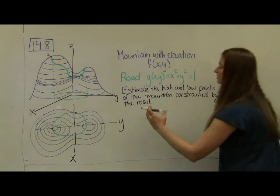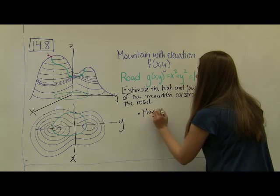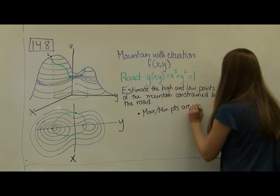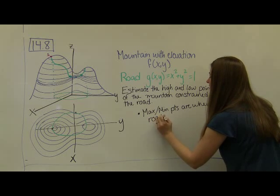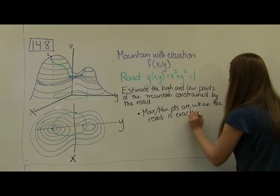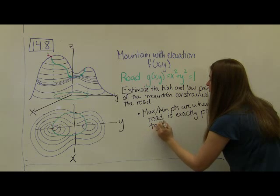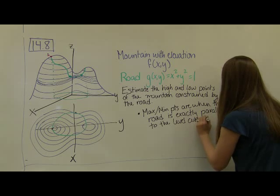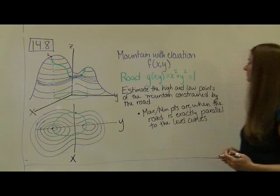That's the first thing we notice from our graphical inspection: max-min points are when the road is exactly parallel to the level curves. Because I can't go any further down because I've gotten exactly level, and then I start coming back up again.